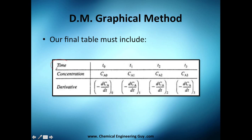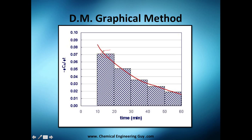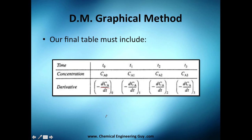Our final table must include time and concentration, obtained from the experiment. At time zero you have initial concentration, then time 1, time 2, and final time with their respective concentrations. We use this method to get the derivatives — the differential method requires us to calculate d(CA)/dt at different points. Then we use the equation with the natural logarithm of CA versus the natural logarithm of the differential to determine reaction order.